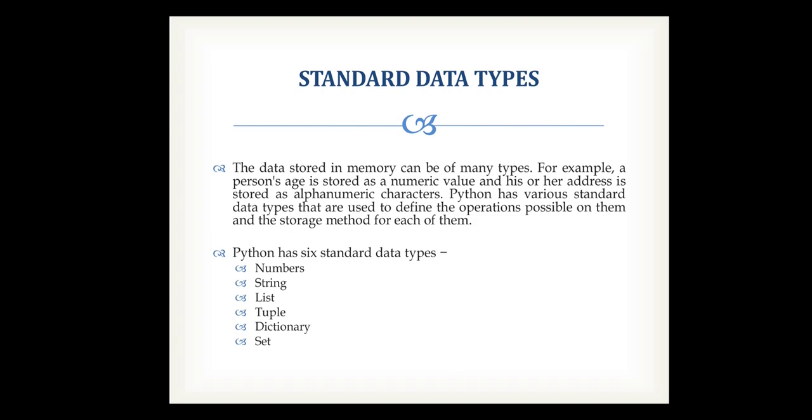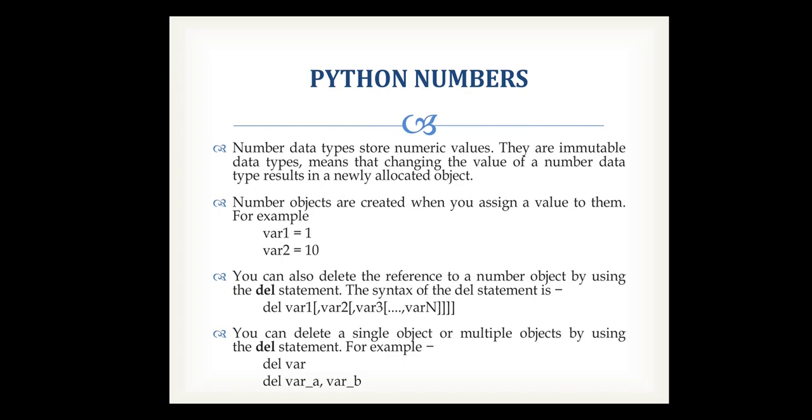The six data types are: number, string, list, tuple, dictionary, and set. Starting with number — the number data type stores numeric values. Numbers are immutable data types, meaning that changing the value of a number data type results in a newly allocated object.